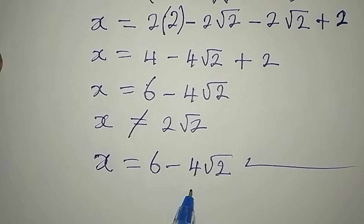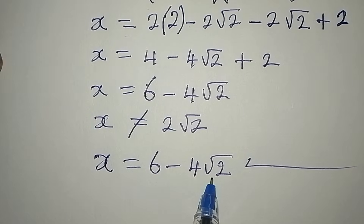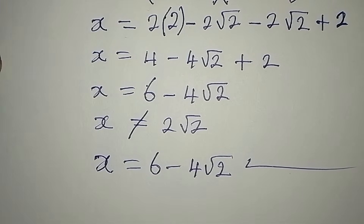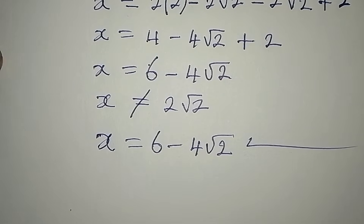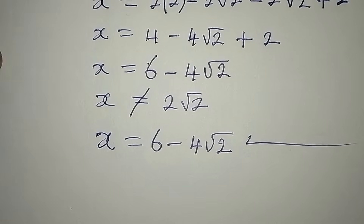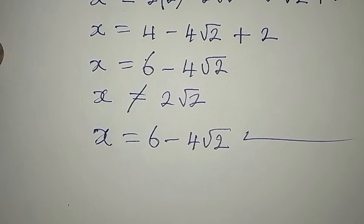If you want your answer in decimal form, you get the square root of 2, multiply it by 4, then subtract that from 6 — that becomes your value in decimal form. Thank you for watching. If you've enjoyed this, subscribe to my channel and share it with your friends.